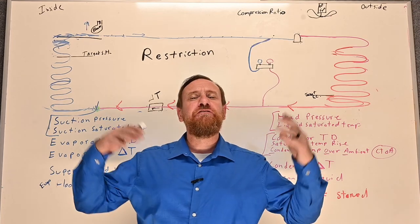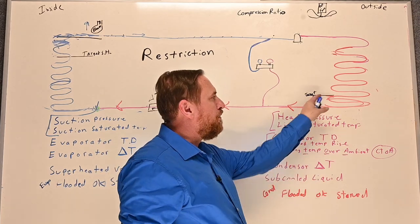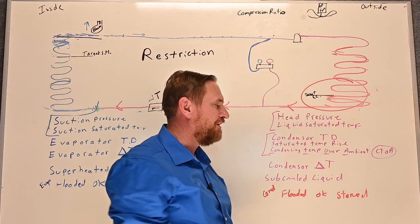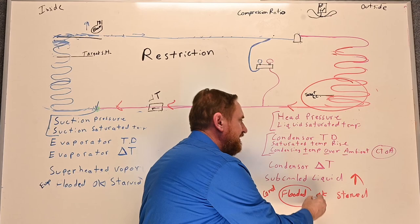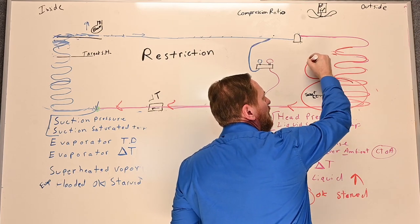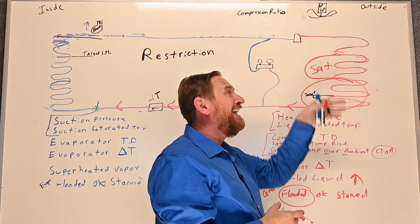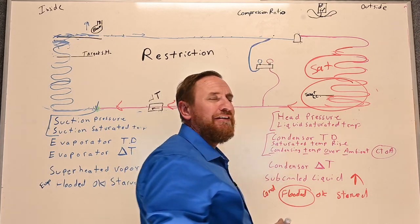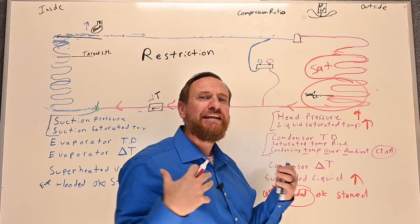Let's see what happens to the refrigeration cycle when we have a restriction. If we have a restriction, the refrigerant flow is limited. We end up with too much subcooled liquid in the condensing unit — our subcooling goes up and we get what's called a flooded condensing coil, because all the refrigerant is backing up inside the condensing unit. Because we have too much subcooled liquid, there's a much smaller area for saturation to occur.